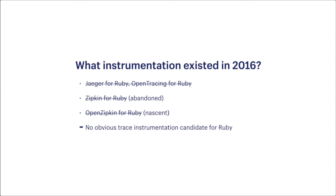When we started, there wasn't much publicly available for Ruby. The Zipkin gem had been abandoned and development had shifted to OpenZipkin, but it was pretty early days. Jaeger hadn't been open sourced yet, and it lacked instrumentation for Ruby anyway. OpenTracing didn't exist for Ruby, and when it showed up later, the API didn't feel especially idiomatic to us. More generally, instrumentation tended to be tightly coupled with the storage backend. While some commercial tracing backends existed, there wasn't a clear winner, and they all provided their own instrumentation libraries.